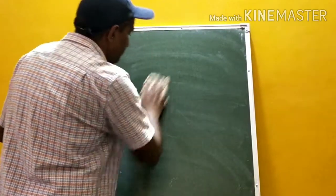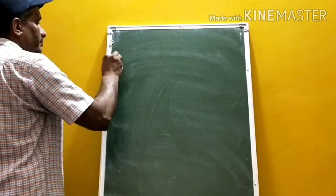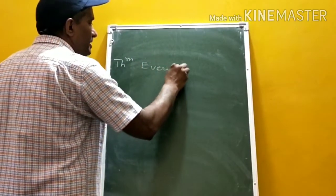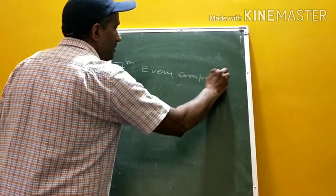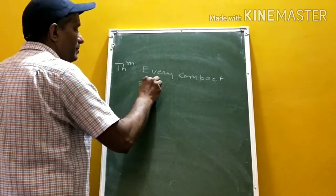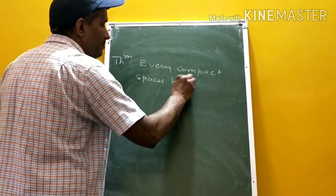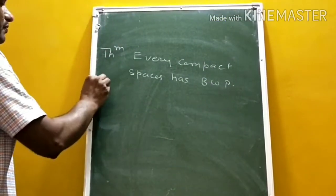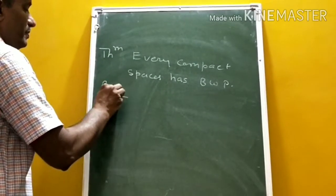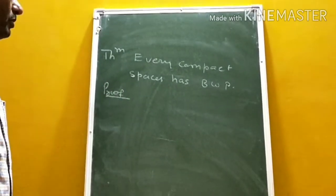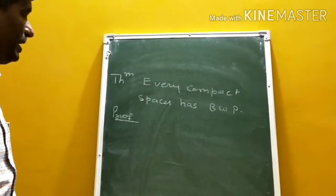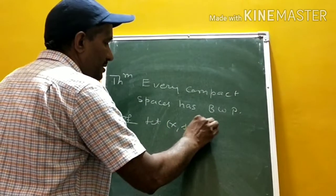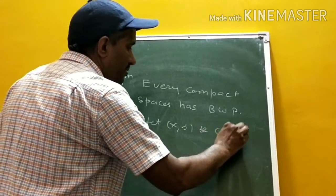First theorem: every compact space has Bolzano's property. Let X be a compact topological space. We use a proof by contradiction. Suppose Bolzano's property does not hold.